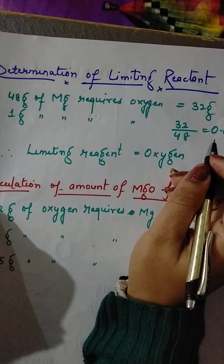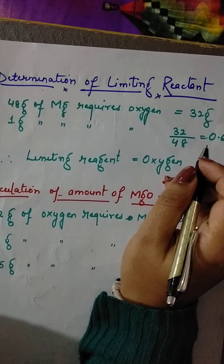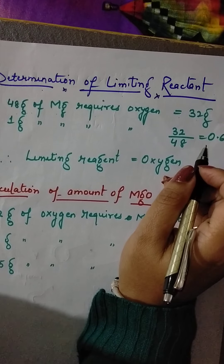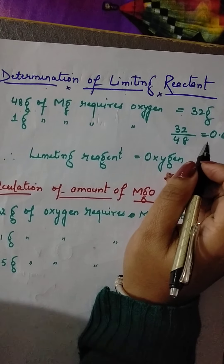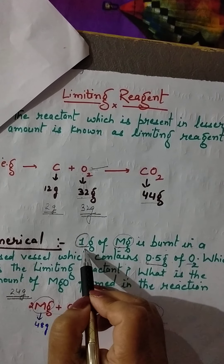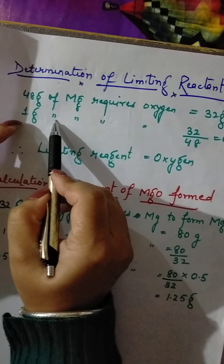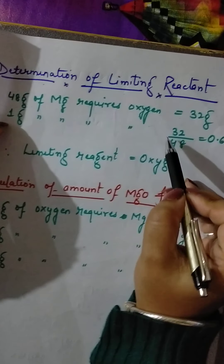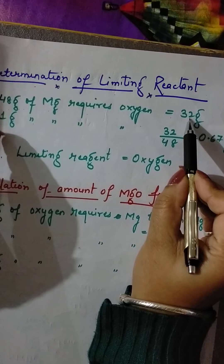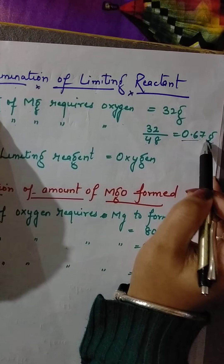But how much magnesium is available here? Only 1 gram. So if I have 1 gram of magnesium, how much oxygen do I need? I need 32 divided by 48, which equals 0.67 grams of oxygen.